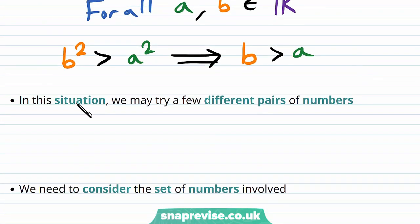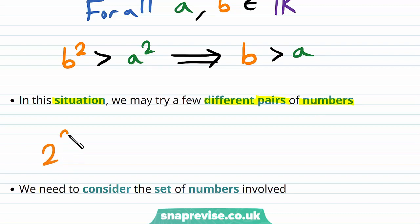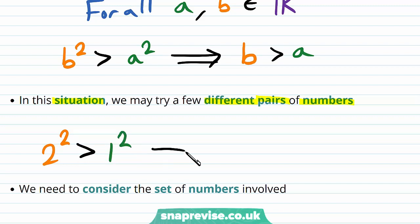In this situation, we may try a few different pairs of numbers. As an example, if b is 2, then 2 squared is greater than — say, if a is 1 — 1 squared. And this does certainly imply that 2 is greater than 1.